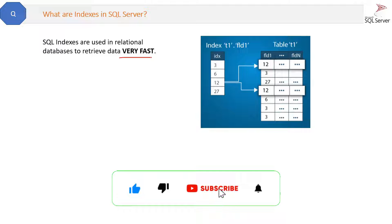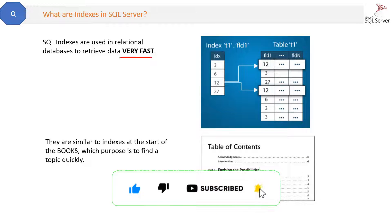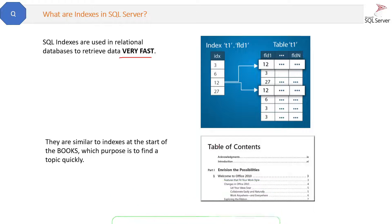It is similar to indexes at the start of books, whose purpose is to find a topic quickly. A book index is an example of a non-clustered index.